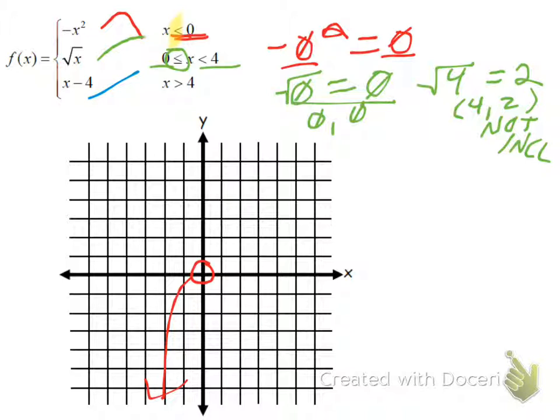So you start plotting. Zero, zero is included. So I'm going to fill in this empty, this once empty circle. I'm going to fill it in. And I know I'm also going to have a point at four, two.